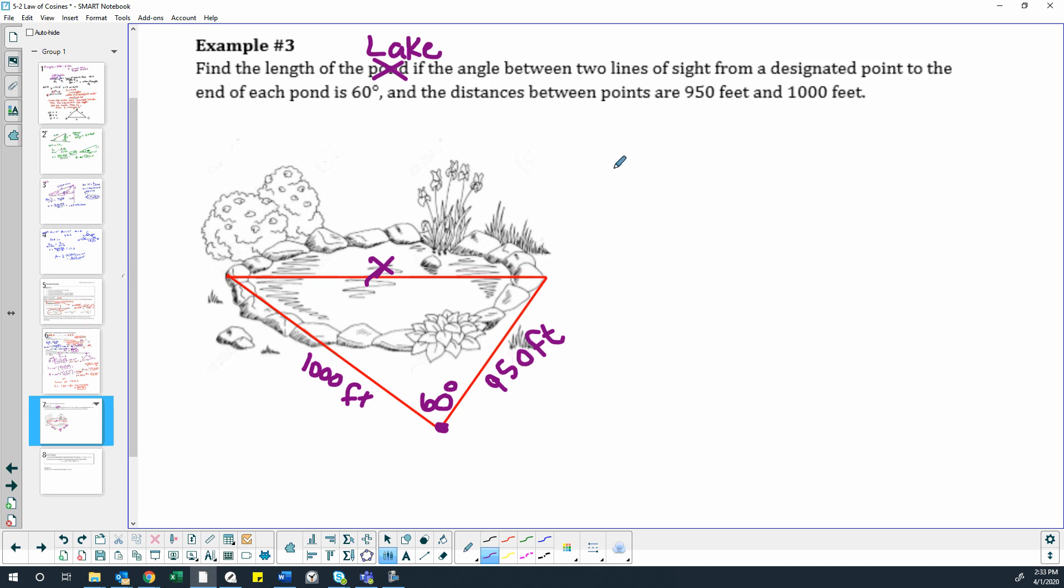Okay, so we're using law of cosines. x is going to equal the square root of 1,000 squared plus 950 squared minus 2 times 1,000 times 950 times the cosine of 60 degrees.